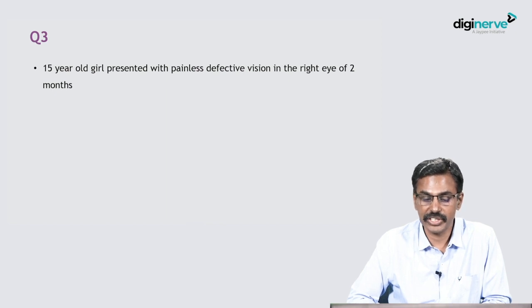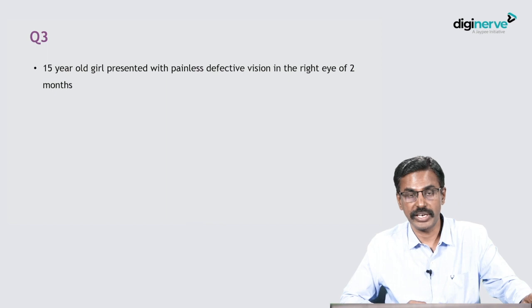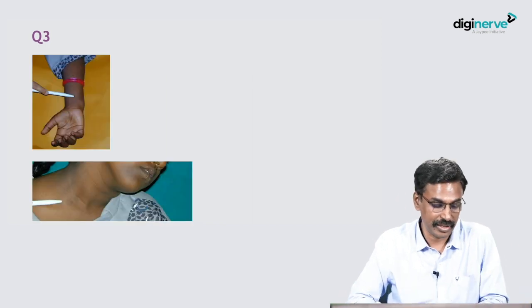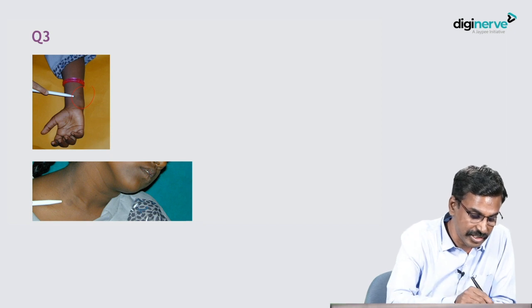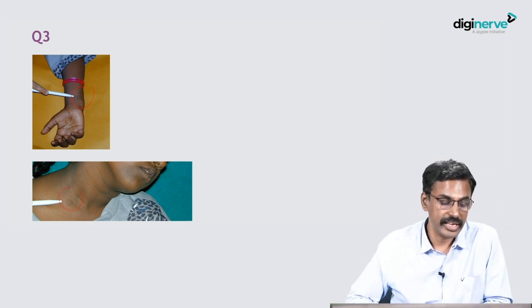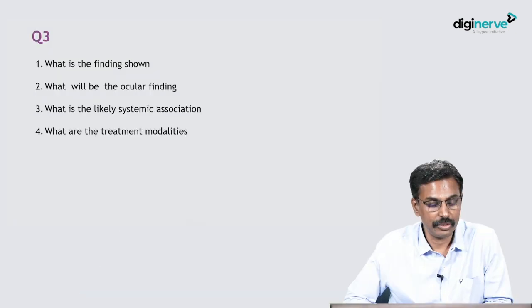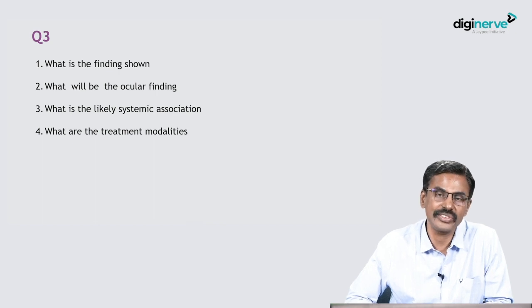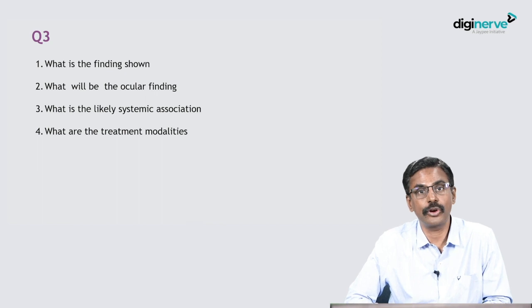The next case is a 15-year-old girl presenting with painless defective vision in the right eye of two months duration — a slowly progressive defective vision. These are the systemic findings; note the skin finding. What is the finding shown systemically? What will be the corresponding ocular finding causing the vision loss? What is the likely systemic syndromic association, and what are the treatment modalities?